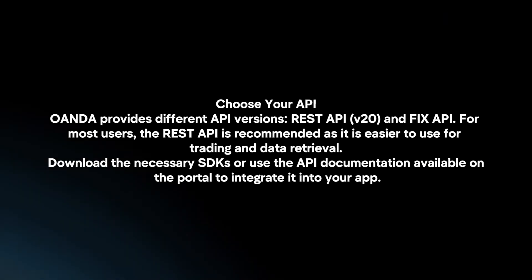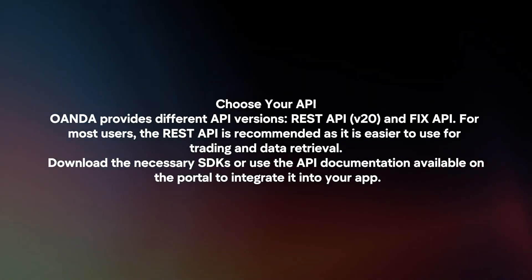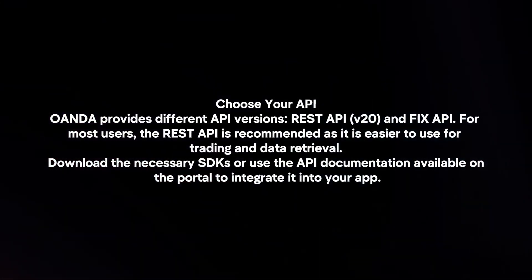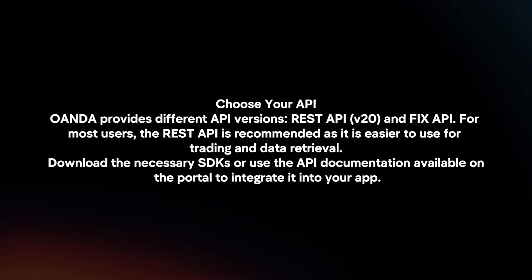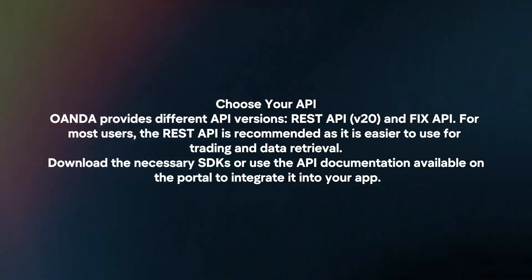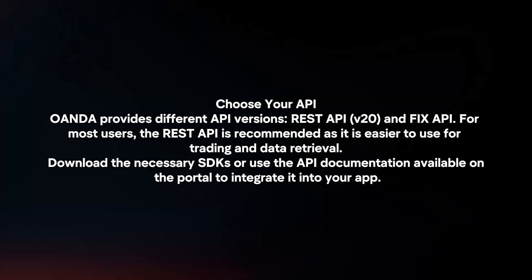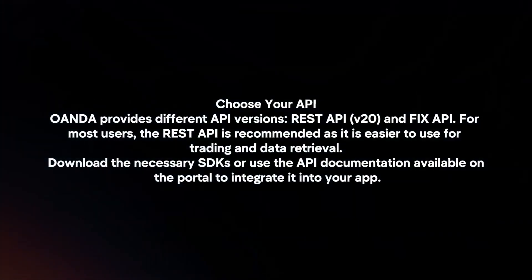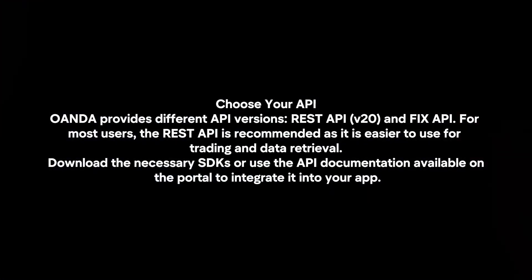Choose your API. Oanda provides different API versions: REST API and FIX API. For most users, the REST API is recommended, as it is easier to use for trading and data retrieval. Download the necessary SDKs or use the API documentation available on the portal to integrate it into your app.